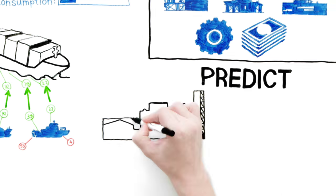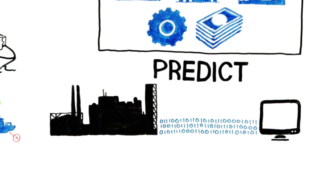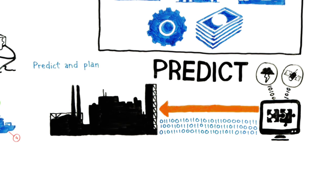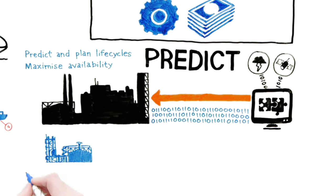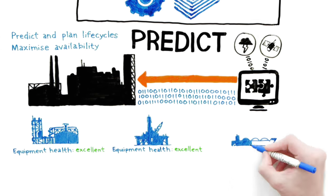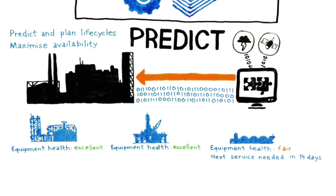Predict. By analyzing data from your equipment and combining them with data from other sources, we can predict and plan the life cycles of your various pieces of equipment and maximize their availability. For example, maintenance can be planned based on the actual condition of your equipment, rather than by using a predetermined schedule.